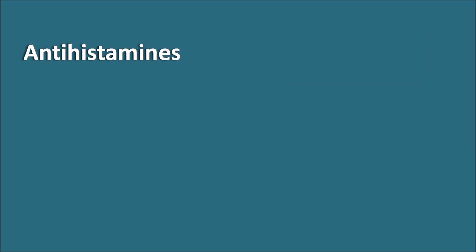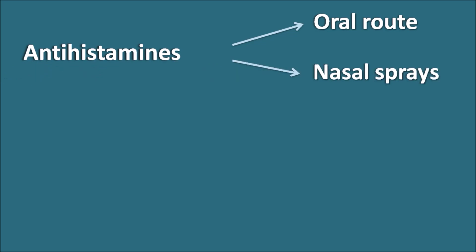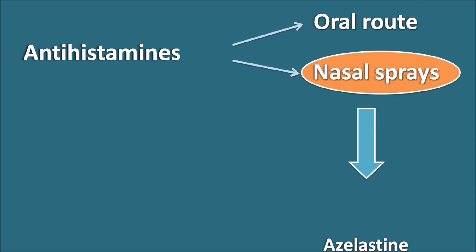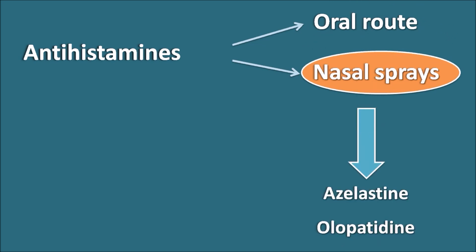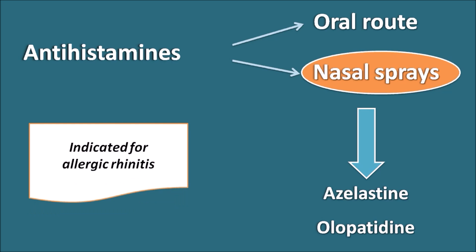Antihistamines can be given by two routes: the oral route and as nasal sprays. Most drugs are given orally, but very few are given as nasal sprays. The two antihistamine drugs given as nasal sprays are azelastine and olopatadine, and they are indicated for the treatment of allergic rhinitis.